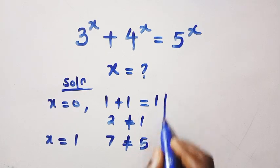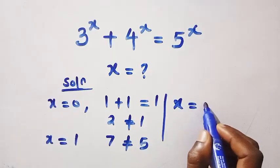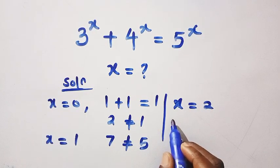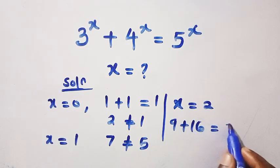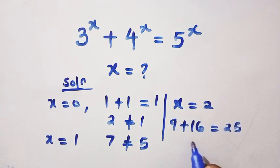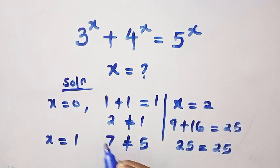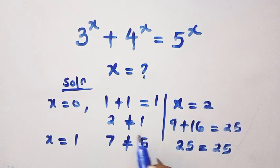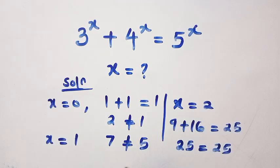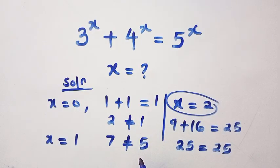If we test x equals 2, we have 3 squared which is 9, plus 4 squared which is 16, and that equals 5 squared which is 25. So 25 equals 25 — it seems x equals 2 is the solution. This looks like a Pythagorean triple identity, and checking any number greater than 2 gives an unequal equation, so x equals 2 appears to be the only answer.